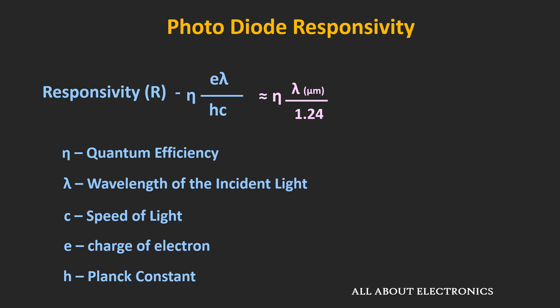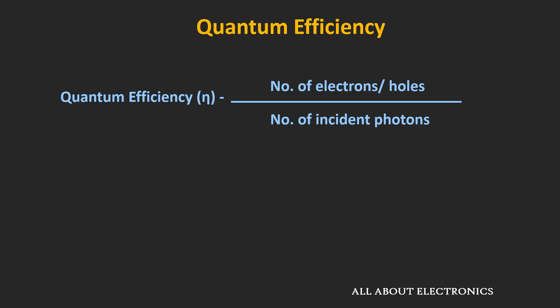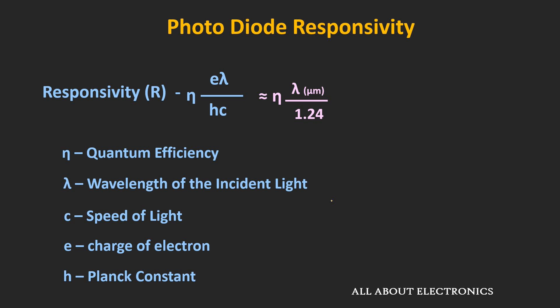Responsivity can be expressed by a mathematical expression where η is the quantum efficiency and λ is the wavelength of the light. The quantum efficiency can also be expressed by an expression where the numerator is the number of electron-hole pairs actually contributing to the flow of current, and the denominator is the number of incident photons. In short, responsivity is a function of quantum efficiency and wavelength.